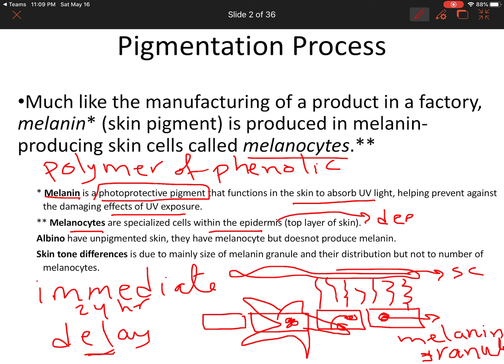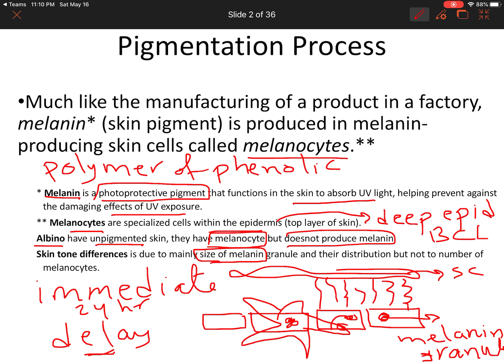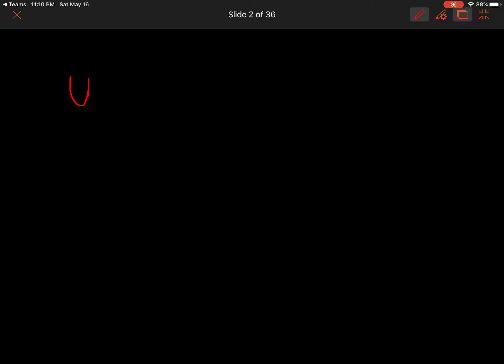Melanocytes are found in the basal cell layer of the deep epidermis. Albinos have unpigmented skin — they do have melanocytes but do not produce melanin due to a genetic problem. Different skin tones depend mainly on the size of melanin granules and the distribution of those granules. The number of melanocytes does not determine skin tone — only the size and distribution of the melanin granules matter.